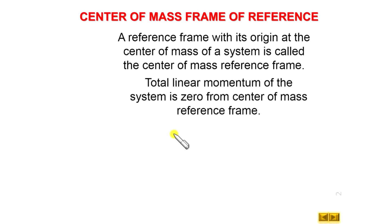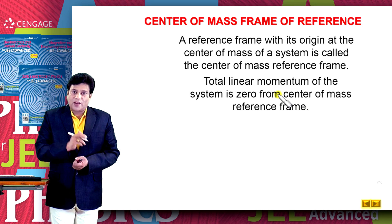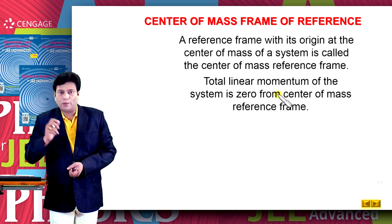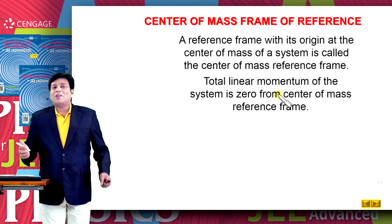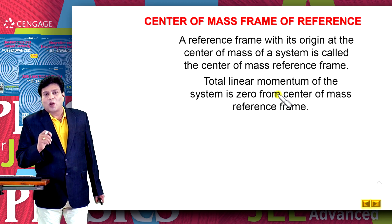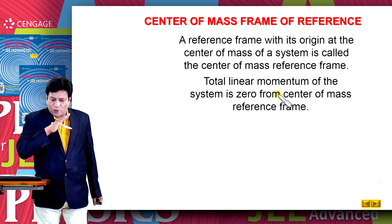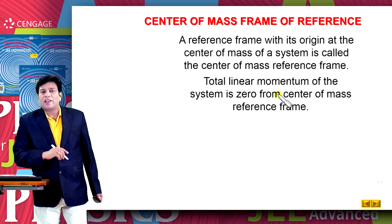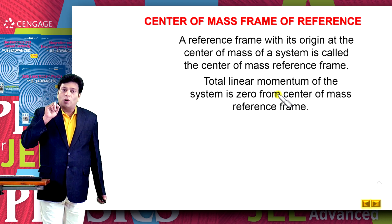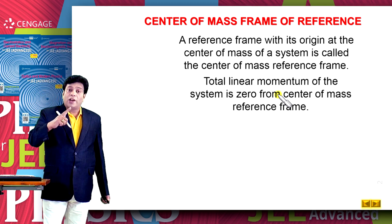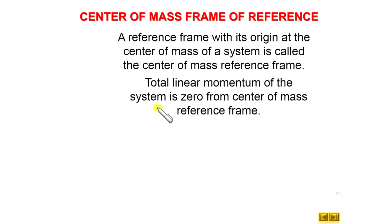That is why we call this frame of reference a zero momentum reference frame. It means we need not care about the linear momentum of the system if we analyze the situation from the center of mass frame of reference. So in many cases while problem solving, if the linear momentum is always 0, we need not care about that equation — meaning one equation gets eliminated.